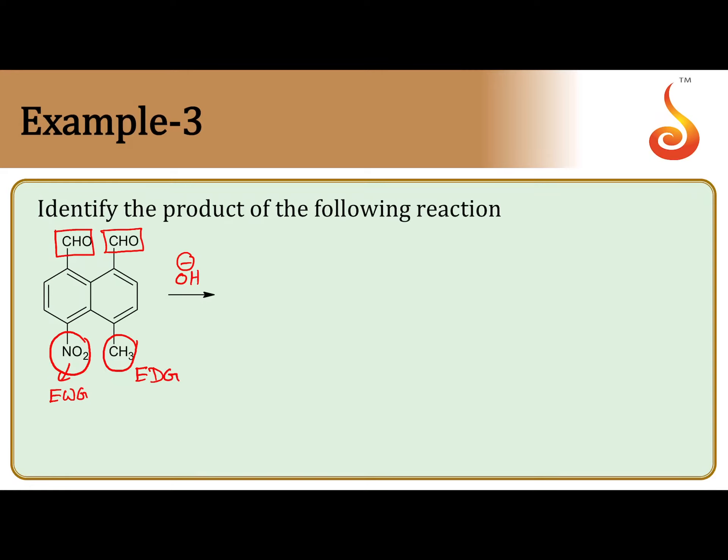When an electron withdrawing group is there at that carbonyl carbon, the magnitude of positive charge will be increased. If an electron donating group is there, the magnitude of positive charge at carbonyl carbon gets decreased.